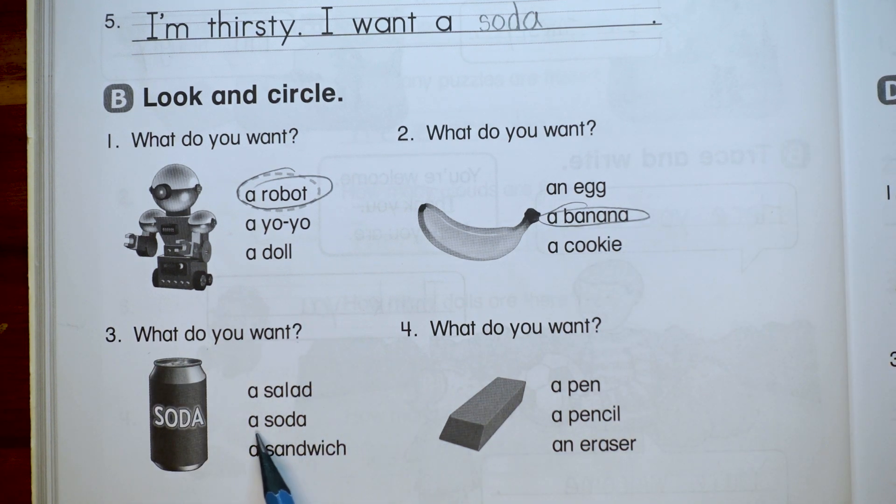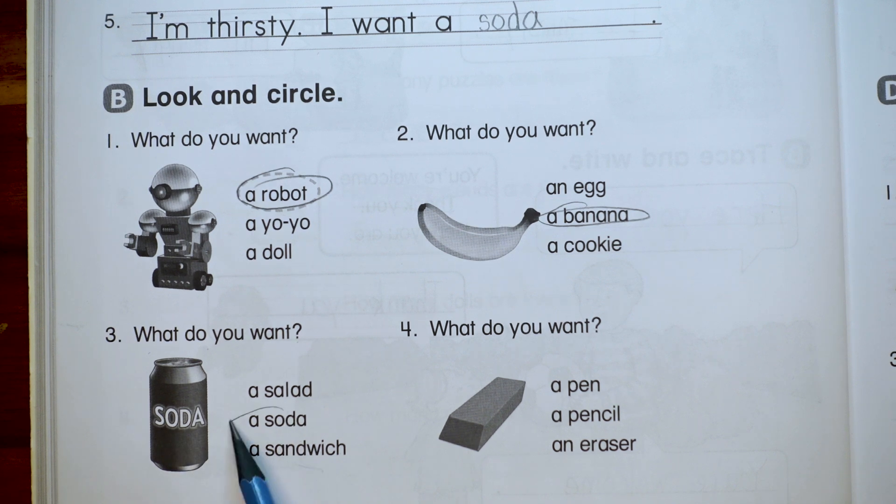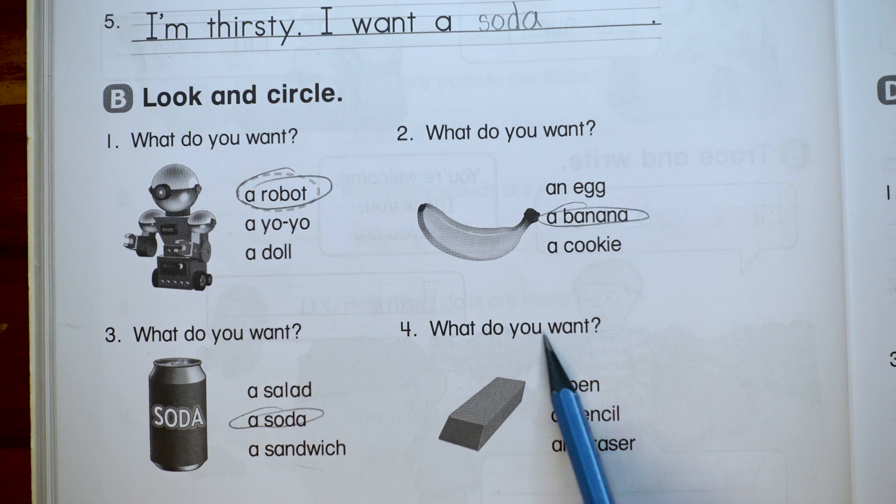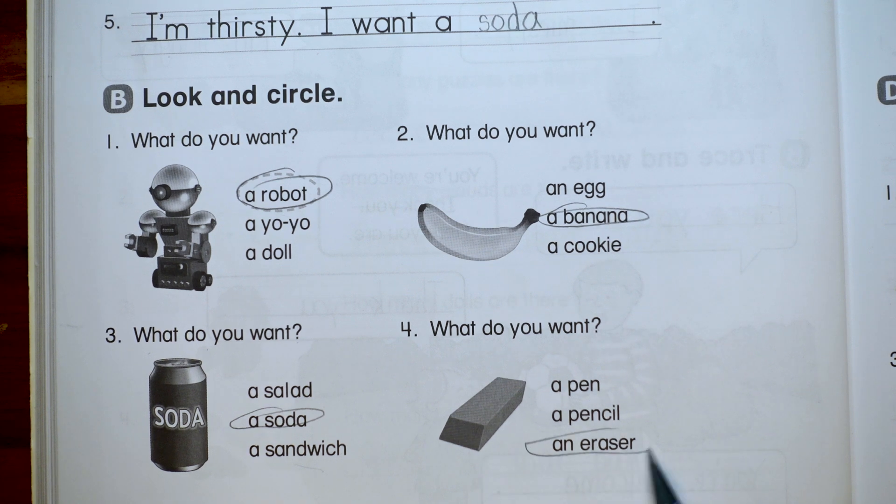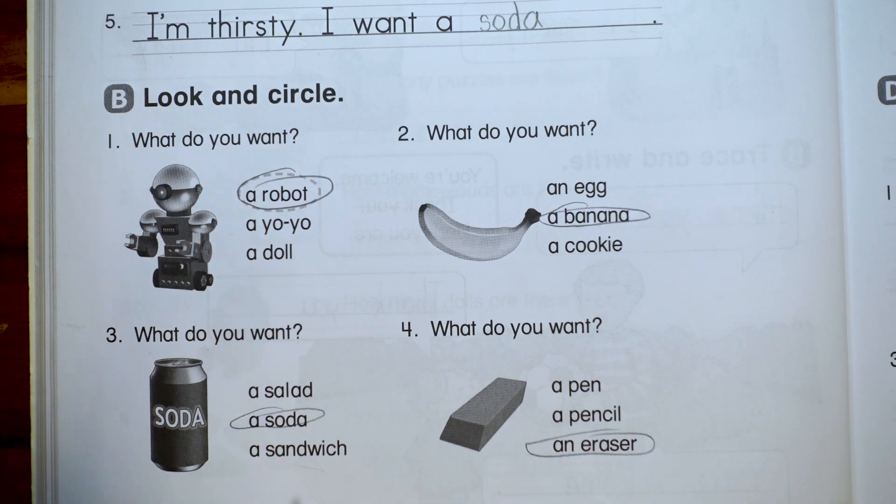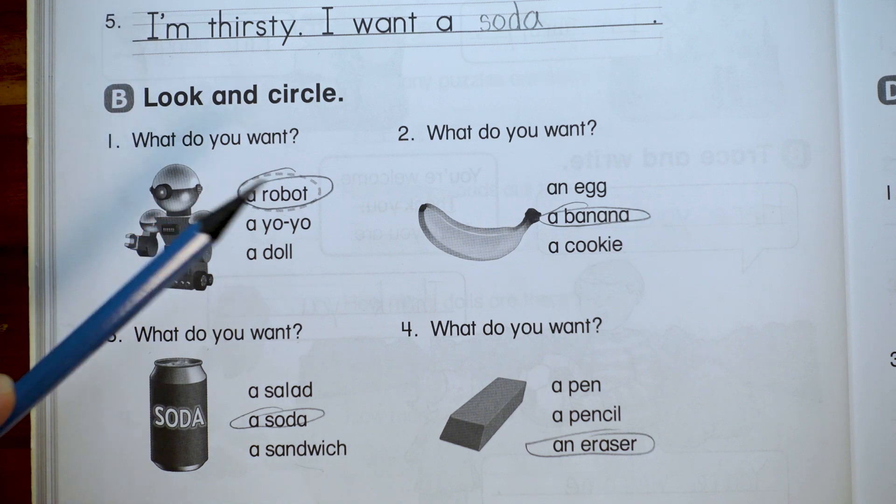What do you want? A salad, a soda, a sandwich. A soda. What do you want? A pen, a pencil, an eraser. An eraser. Just like that. We're done Part B. Let's go on to Part C.